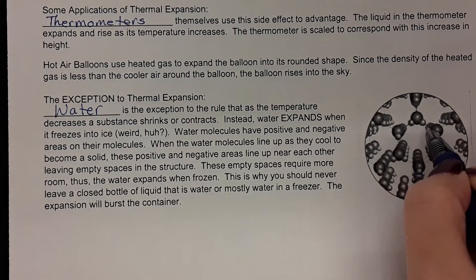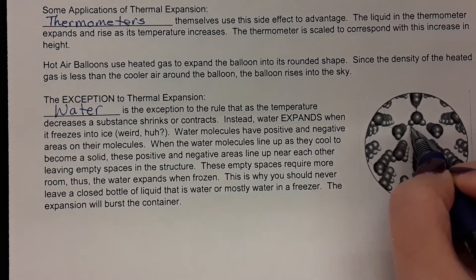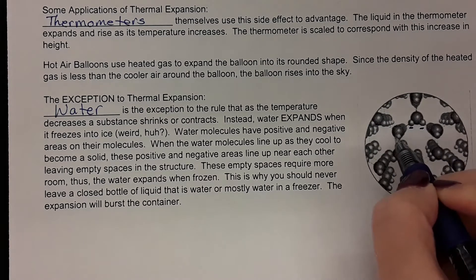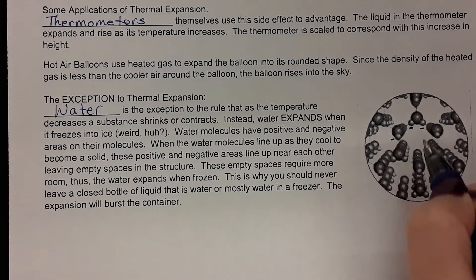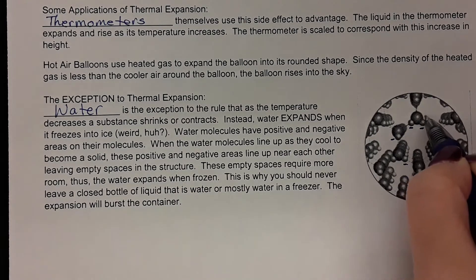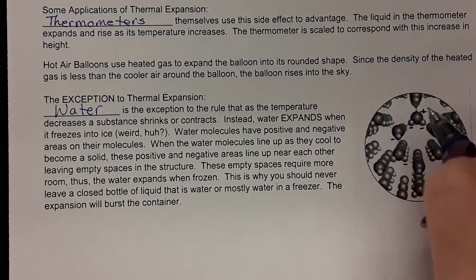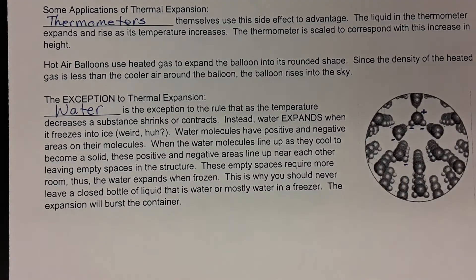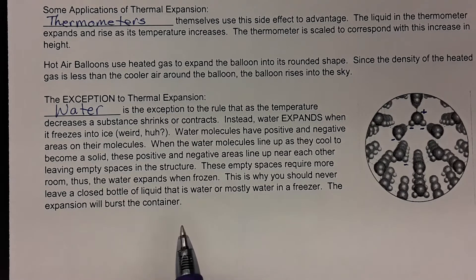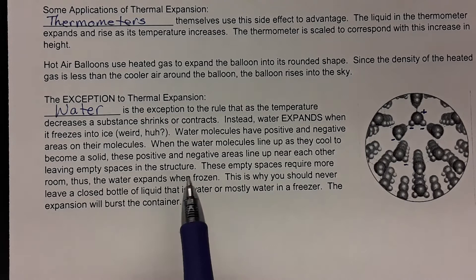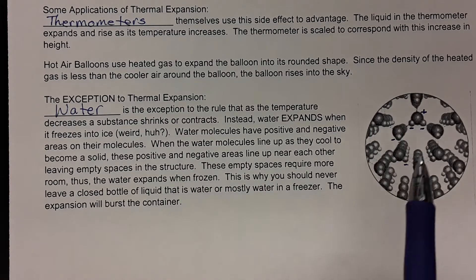The hydrogens are negative, and the bigger blobs that are oxygen molecules — those are positives. As the molecules in liquid water come together and bond to become ice, those water molecules turn so that the negatives and positives line up.